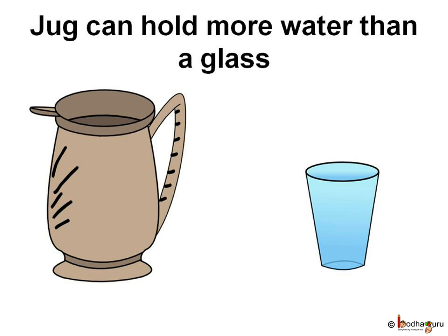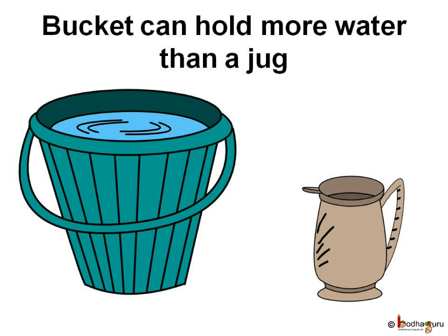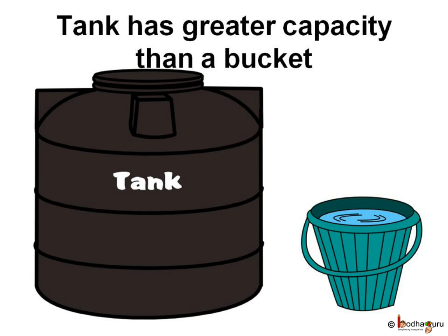You know, capacity describes how much a container can hold. The jug is bigger than the glass, so it has a greater capacity and can hold more water. Same way, a bucket can hold more water than a jug. Suppose we can fill twelve buckets of water from a tank — then the tank has a capacity of twelve buckets of water.